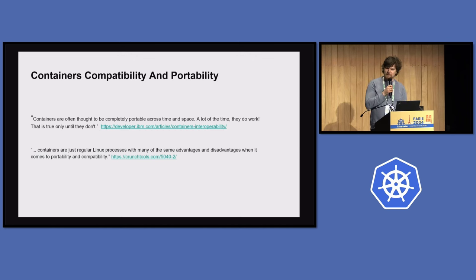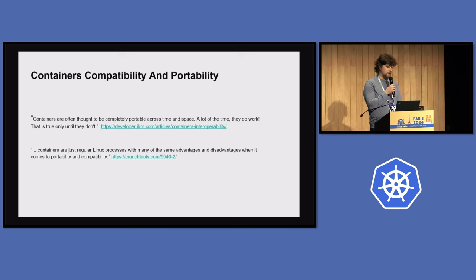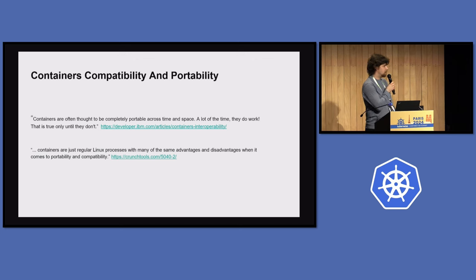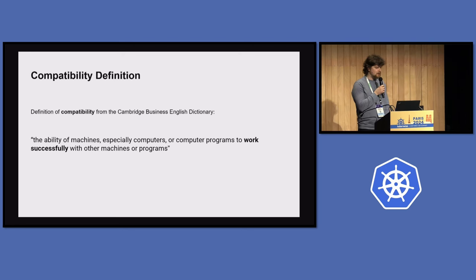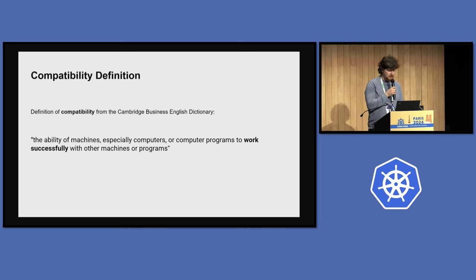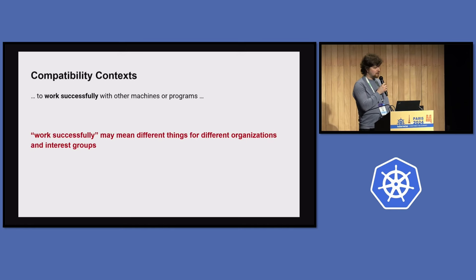However, in telco we discovered that it's quite obvious — we require specific things regarding hardware, OS configuration, and so on, so it cannot always work out of the blue, especially for heavy workloads like CNF routers. When we started the working group, I learned that compatibility means something different for different organizations. I find the Cambridge Business English Dictionary definition very accurate: computer programs working successfully with other machines or programs — and 'work successfully' is a keyword because it means something else for different organizations and interest groups.